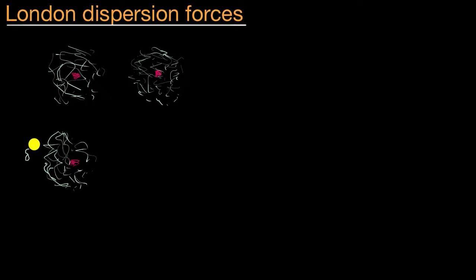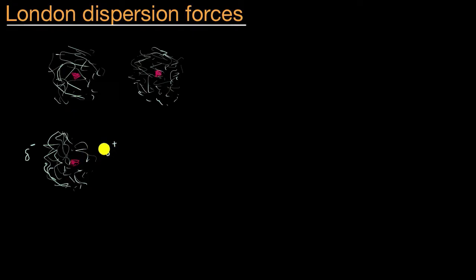So for that brief moment, you have a partial negative charge — this is the Greek letter delta, lowercase delta, which is used to denote partial charge. And on this side, you might have a partial positive charge. Because when it was evenly distributed, the negative charge was offset by the positive charge of the nucleus. But here on the right side, because there are fewer electrons, maybe you have a partial positive. On the left side, where most of the electrons are in that moment, a partial negative. Now what might this induce in the neighboring atom? Pause the video and think about what might happen.